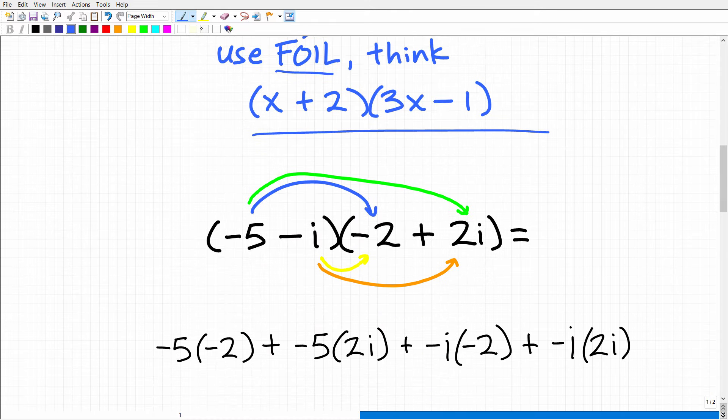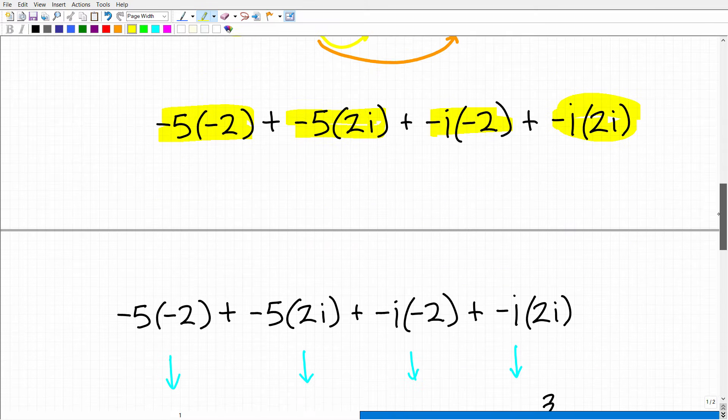All right. So here we have negative 5 times negative 2. That's our first. Remember, first, outer, inner, last. So negative 5 times negative 2. We have that right there. Of course, we'll simplify all this in a second. So outer is going to be negative 5 times 2i. So we have that right there. Our inner is going to be negative i times negative 2. And then we have negative i times 2i. That is our last. So now let's go ahead and simplify all this.